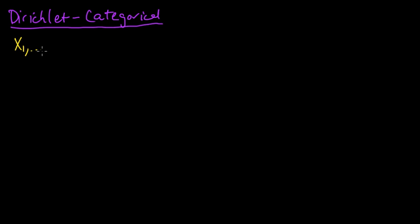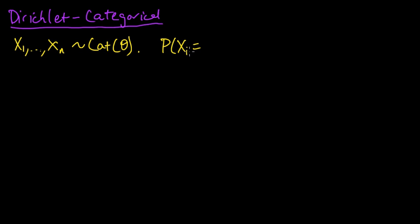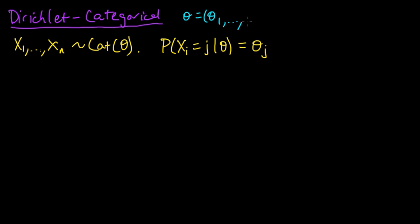In this type of setup we have some random variables x1 to xn, and they're distributed according to a categorical distribution with parameter theta. This just means that there's a PMF on a finite set, so that the probability that xi equals j given parameter theta is just theta_j. So theta here is a vector, and we may as well assume that the xi's take values in 1 to m.